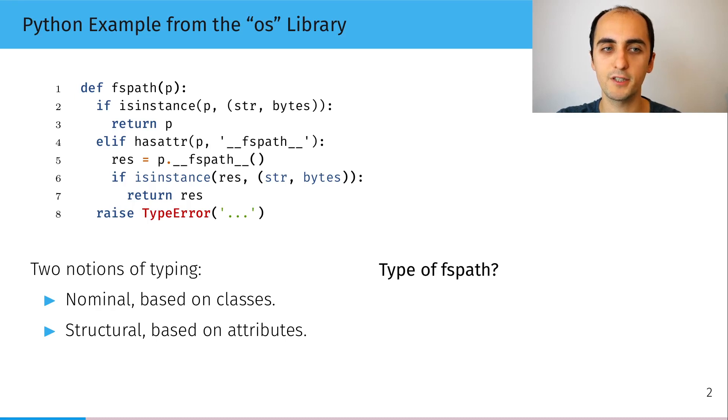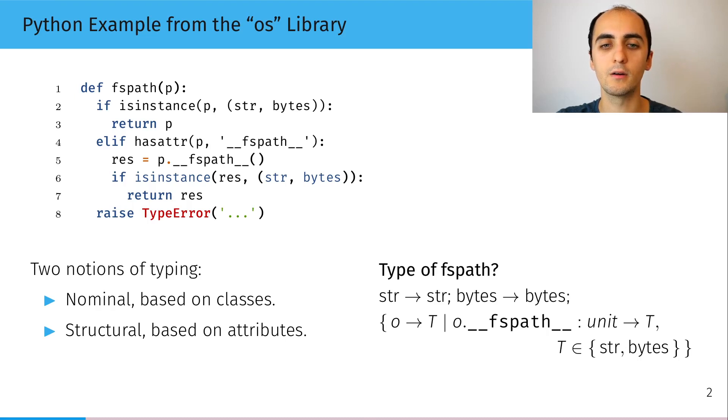Now if you'd like to type this fspath function, typing line 2 and 3 is easy. The function fspath can take any string and return it or any bytes and return it. And then it also has type o to t where o is an object having an fspath method returning type t and t must be either string or bytes.